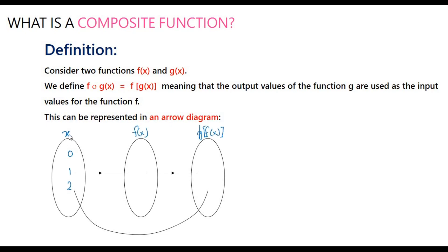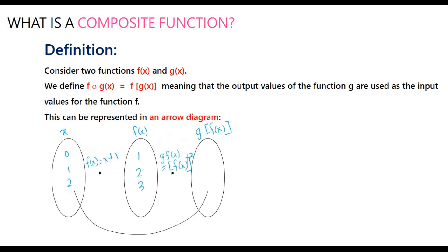Let's label the first set as x, the second set as f(x), and the third as g(f(x)). The elements in x are 0, 1, and 2. The function f(x) = x + 1, so substituting: when x = 0, f(x) = 1; when x = 1, f(x) = 2; when x = 2, f(x) = 3.